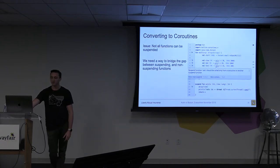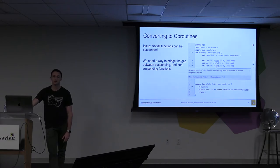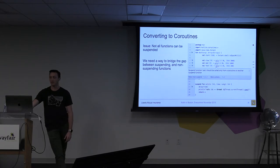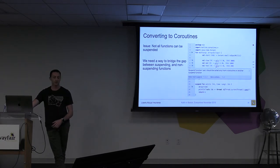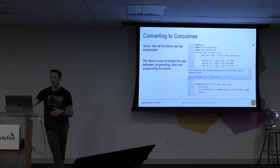We run into an issue if we want to convert everything to suspending functions, because we can't change our main into a suspend. We've got to tell the compiler how we're going to run this asynchronously — we need more context. Now that we can change our calc function on line 16 to suspend, our three calc calls on lines 7, 8, 9 in main are all causing errors.